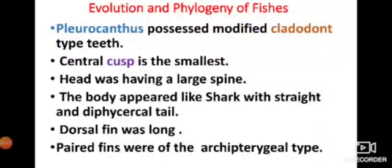Pleuracanthus has a large spine on the head. The body appeared shark-like with a straight diphycercal tail. The dorsal fin is long, and paired fins — both pectoral and pelvic — are present, but they are of the archipterygial type.